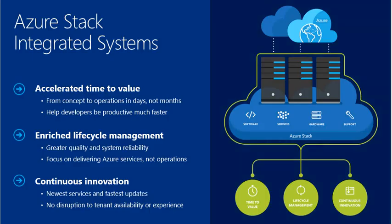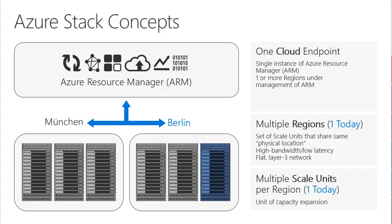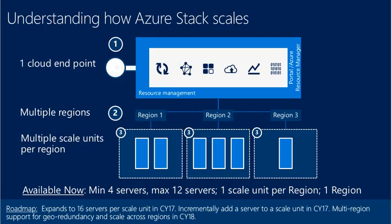The integration itself accelerates time to value, enriches lifecycle management, and enables continuous innovation around software and services. Some providers are already available and more are onboarding. A key concept is multi-region deployment — for example, between two cities like Berlin and Munich — using ARM across these two regions to create endpoints and multiple regions, scaling up and consuming data centers across. It's available with four servers, maximum 12 servers per region, and you can scale one unit per resource manager.